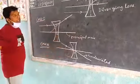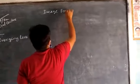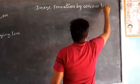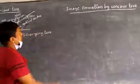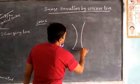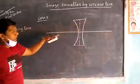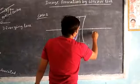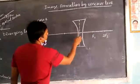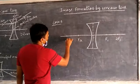You have to represent these two cases. Then we will start image formation by concave lens. So for image formation by a concave lens, this is the concave lens, this is the optical center, and this is focus F1 and focus F2.